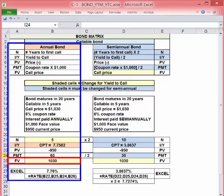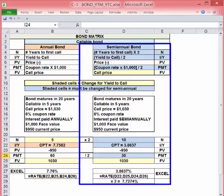For the semi-annual payer, a few more changes are required. N is five times two, the number of six-month periods to the first call. The payment is $30, and FV is still the call price, $1,030. Again we solve for IY, but we have to double the result to find the yield to call. The Excel functions for both examples are shown as well.